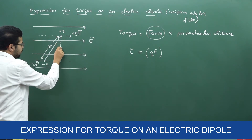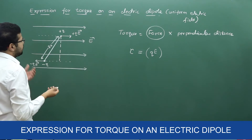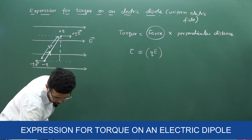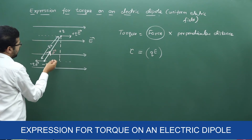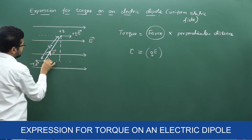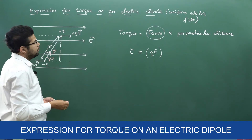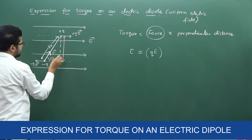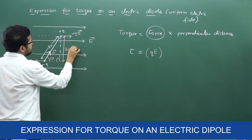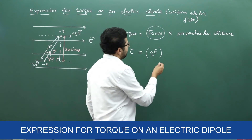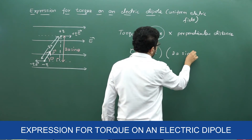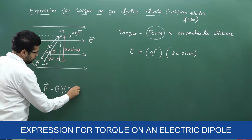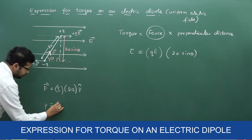This is the perpendicular distance. The direction of electric dipole moment is from negative to positive, and the angle between the electric dipole moment and the electric field is theta. In this right-angle triangle, the perpendicular distance is the opposite side, which gives us 2A sine theta. Therefore, perpendicular distance equals 2A sine theta. From the definition of electric dipole moment, P equals Q into 2A.